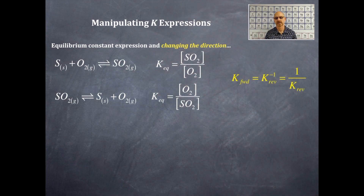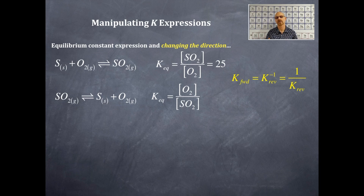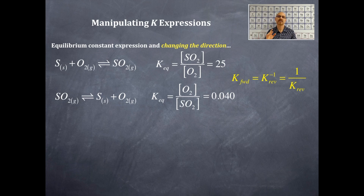The K of the forward reaction equals 1 over the K of the reverse reaction. For example, if the K-EQ for the top reaction in the forward direction is 25, then the K-EQ for the reverse reaction is the reciprocal of 25, which equals 0.040. That's changing the direction — switching reactants and products — and you take 1 over K.